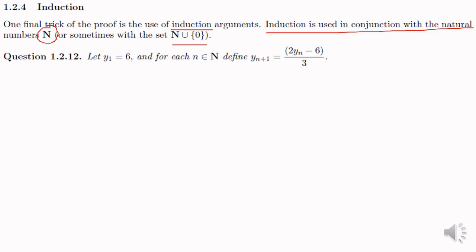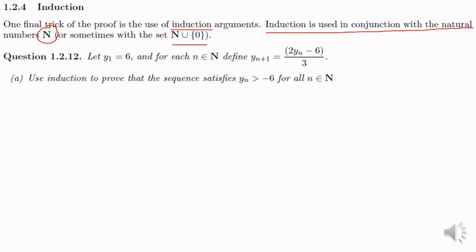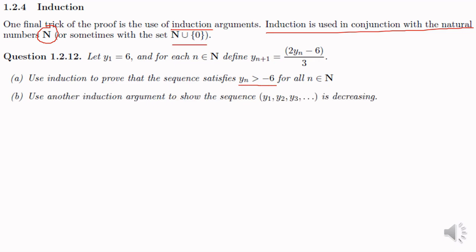Here we have a question: y1 is equal to 6, and for each n element of N, define y(n+1) equal to (2yn minus 6) divided by 3. Part (a): use induction to prove that the sequence satisfies yn greater than minus 6 for all n element of N. Part (b): use another induction argument to show that the sequence y1, y2, y3, etc. is decreasing.